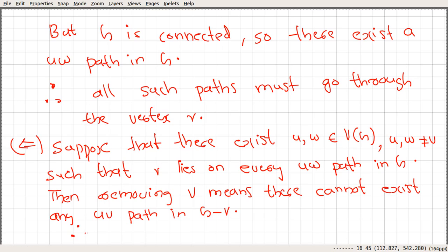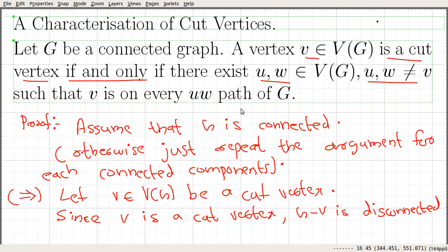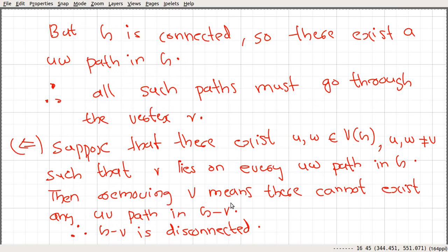That says this particular graph G minus V is disconnected. We started with a connected graph G, and after removing V, since every U-W path passed through V, the graph becomes disconnected with at least two connected components. Therefore V is a cut vertex by definition.